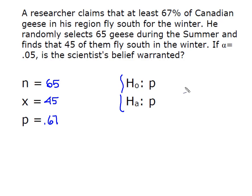So we're going to set up our H0 and Ha. The assumed value of the proportion is 67%, and now we need a direction for our test. The researcher claims at least 67%, which indicates a greater than or equal to.